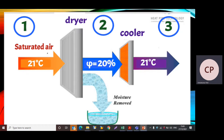Since the process is adiabatic, the enthalpy remains constant and the process takes place along the constant wet bulb temperature line. The condition after drying uses suffix 2, where the relative humidity φ2 is equal to 20%. The air then enters the cooler, and the temperature of air leaving the cooler uses suffix 3, so td3 is equal to 21°C, which is equal to td1.